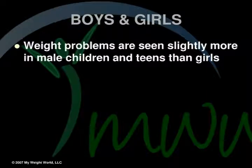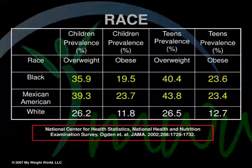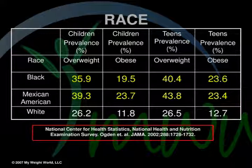Boys and girls: Weight problems are seen slightly more in male children and teens than girls. Examining childhood obesity by race, African Americans have the highest percentage when dealing with obesity and overweight, followed by Mexican Americans, with Caucasians third highest. These trends are similar in adults.